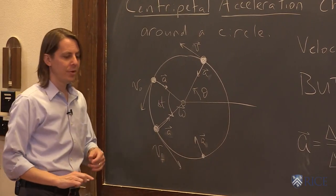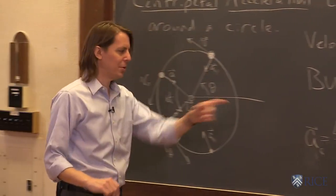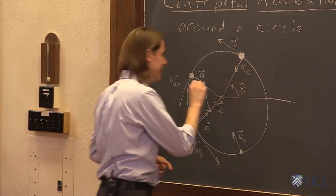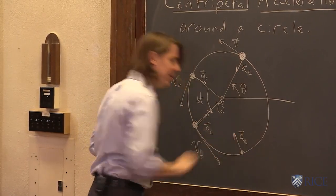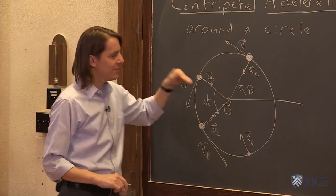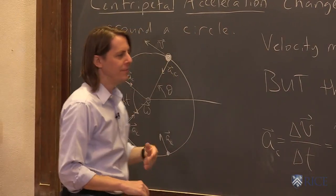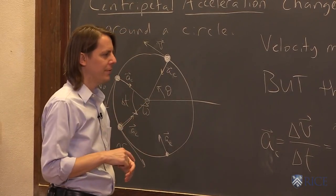So that's what we call it, the centripetal acceleration. Centripetal means center-seeking. So that's why I'm going to put the c on. Those are all centripetal accelerations, center-seeking accelerations. And they seek the center because of this simple combination of v-naught, vf, and calculating vf minus v-naught.